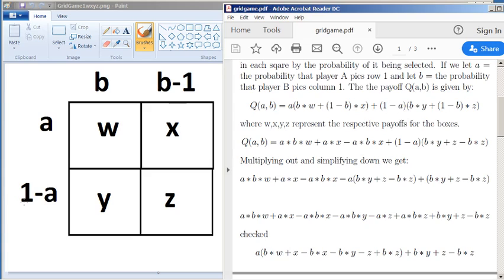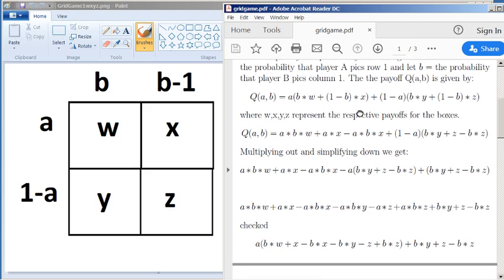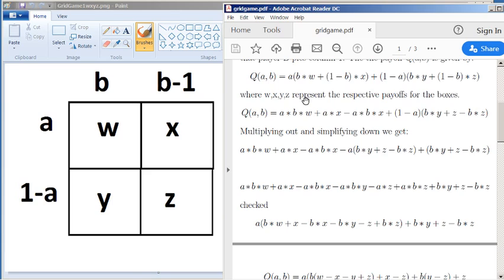And then I'm going to the second row, 1 minus a times everything, and it's b for column 1, b times y, and 1 minus b times z, or times the 1 minus a. So that's the average expected payoff. If you stuck to those probabilities and played lots of times, that's the average payoff. So where w, x, y, and z are half of these squares here.